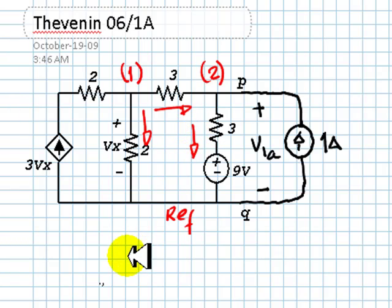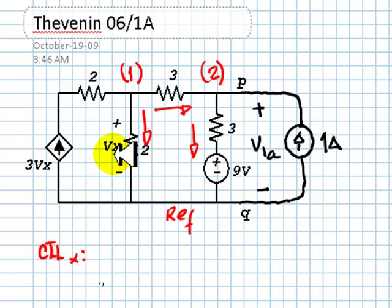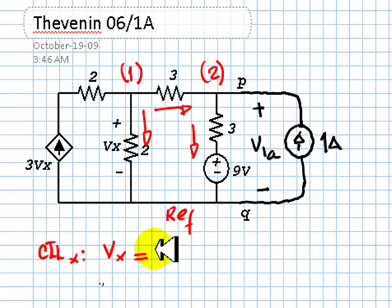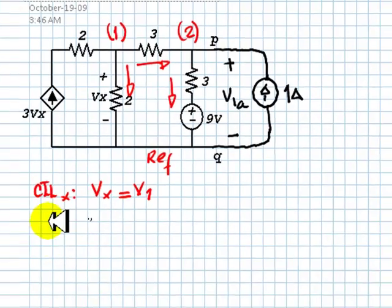We are ready to write our equations. We have no evil branches. There is one controlling equation, CTLX: VX is V1. That is our first equation.